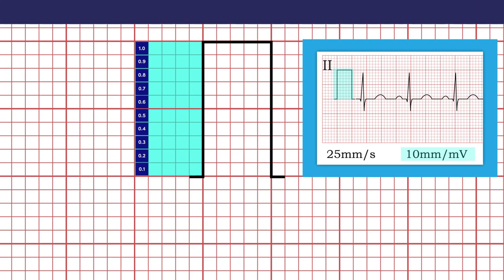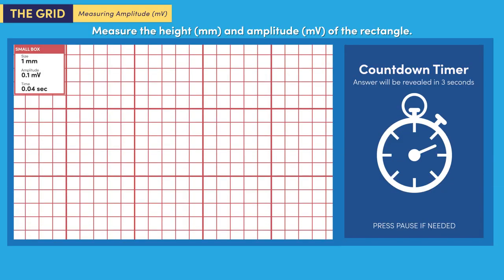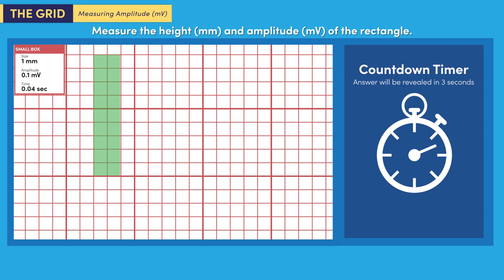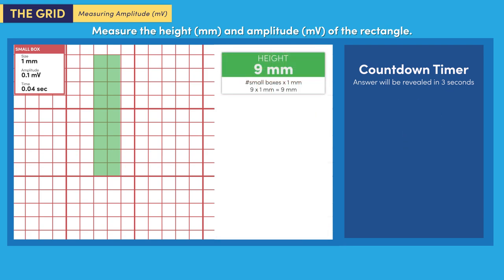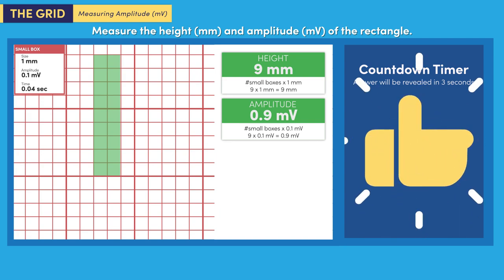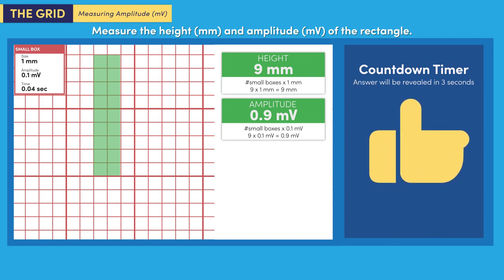It's time to practice. State the height and amplitude of this rectangle. The three-second timer is about to begin, so press pause if needed. The height is 9 millimeters and the amplitude is 0.9 millivolts. Did you answer correctly? I knew you would. Great job.